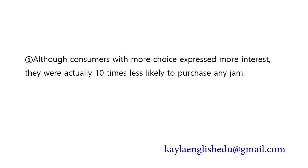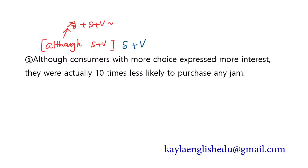Although consumers with more choice expressed more interest, they were actually 10 times less likely to purchase any jam. although는 접속사이므로 뒤에 주어+동사 문장이 나와야 해요. although절이 양보절로 나오고, 내가 중요하게 다루는 것은 뒤에 나오는 주절이에요. 그들은 실제로 10배나 어떠한 잼을 살 것 같지 않다 — 덜 산다는 이야기를 하는 거죠.